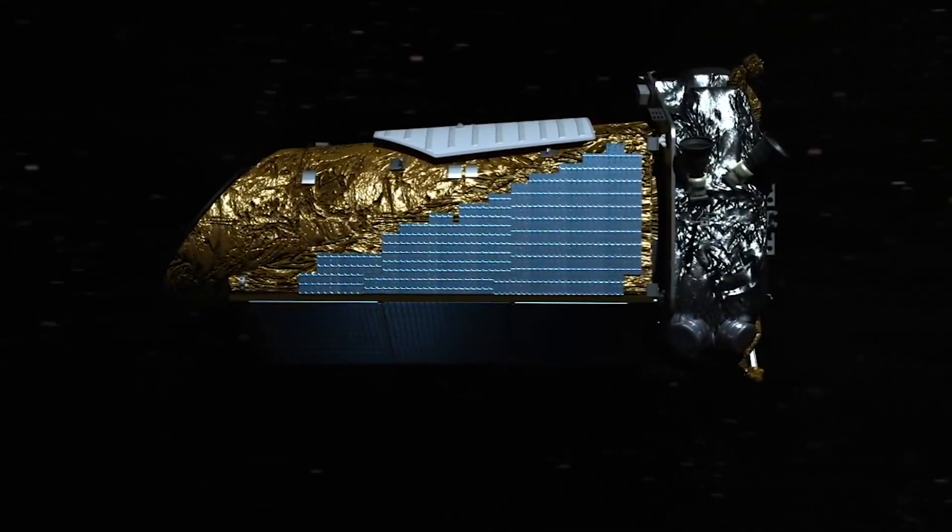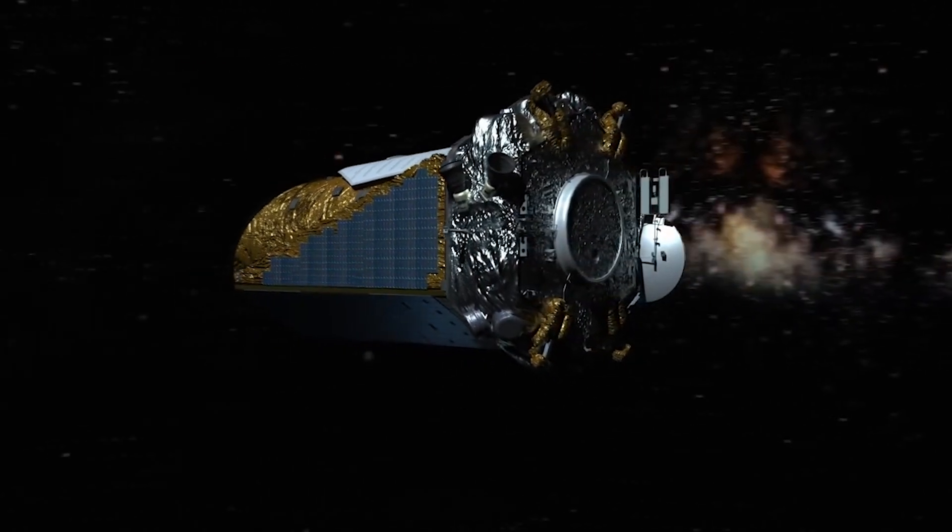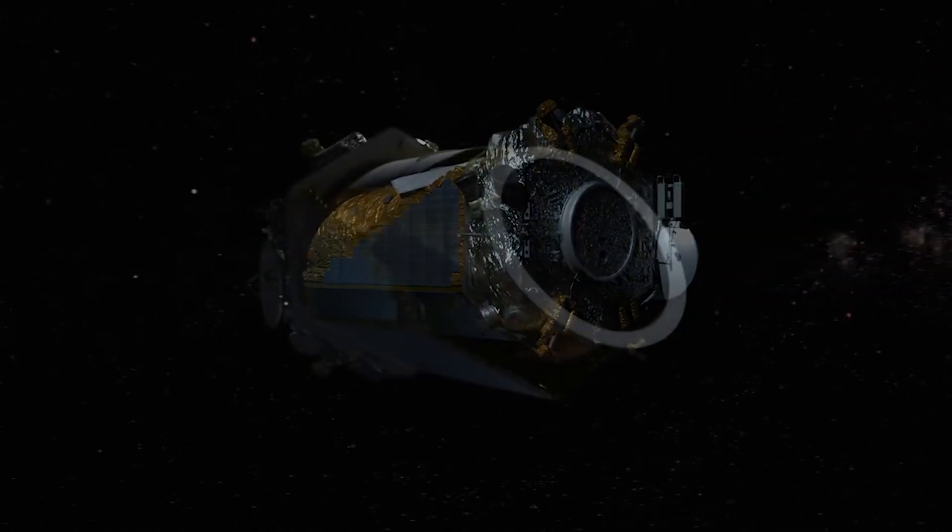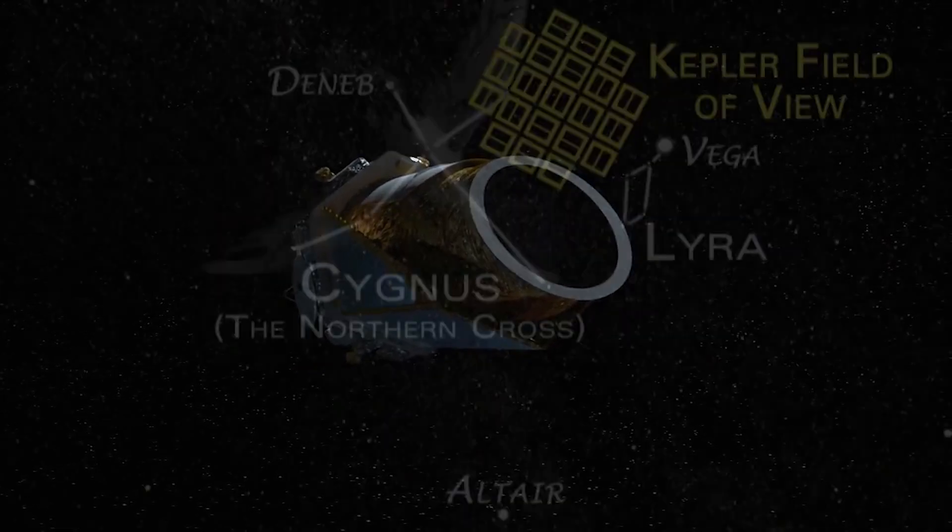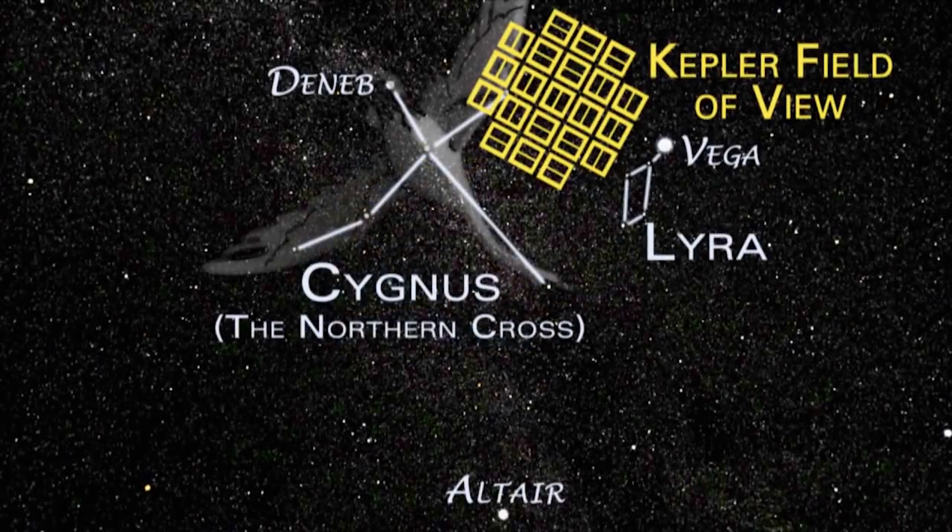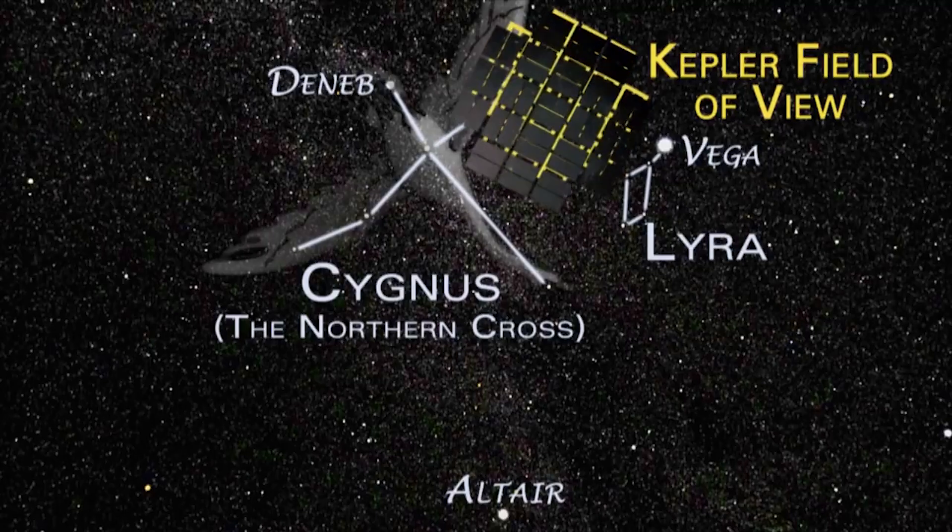To answer the first question, we have to look at how Kepler worked. Kepler is a space probe, which constantly monitored about 150,000 stars in a fixed field of view using its camera. The field of view focuses on a patch of sky near the constellation Cygnus. This is what Kepler can see.